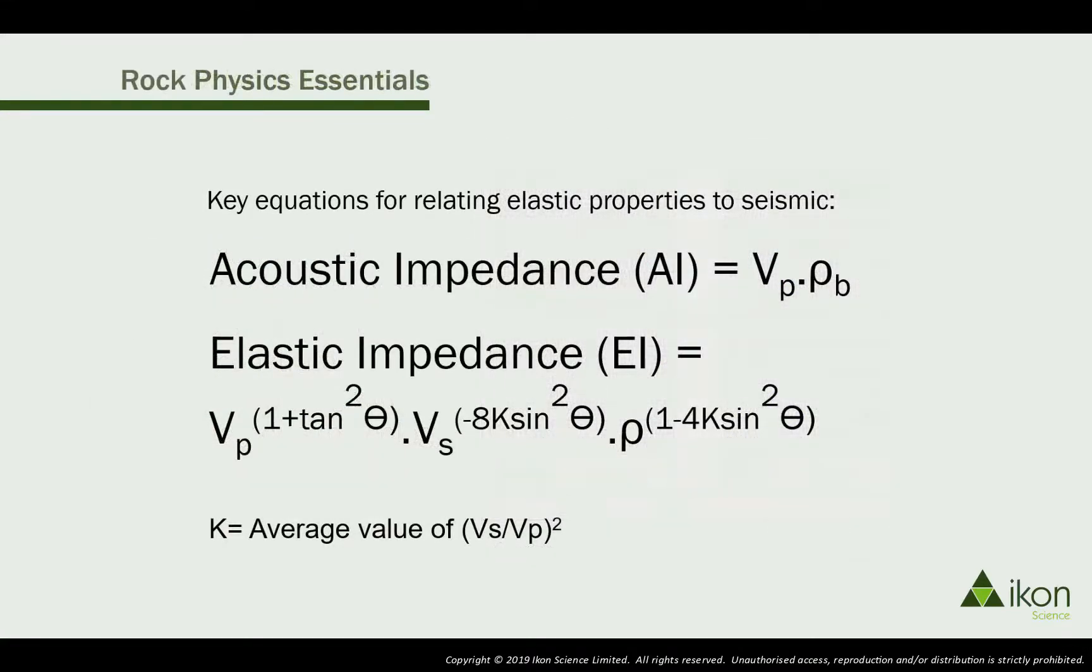The amplitude at normal incidence is a function of the acoustic impedance contrast between the layers, while the way the amplitude changes with angle is a function of the elastic impedance contrast between the layers.